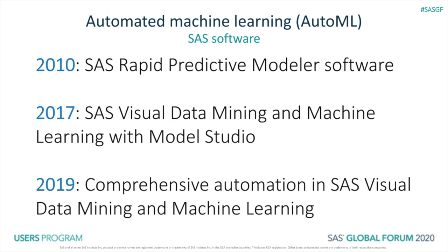Like Enterprise Miner, Model Studio is an interactive pipeline environment for putting together the various steps for data mining and machine learning models, from data preparation to model comparison, and includes automation at various levels of the model building process. And just last year, in 2019, the 8.5 release of SAS Visual Data Mining and Machine Learning included true AutoML, including automation of the entire machine learning pipeline, as well as other new tools for automation specific to particular tasks.